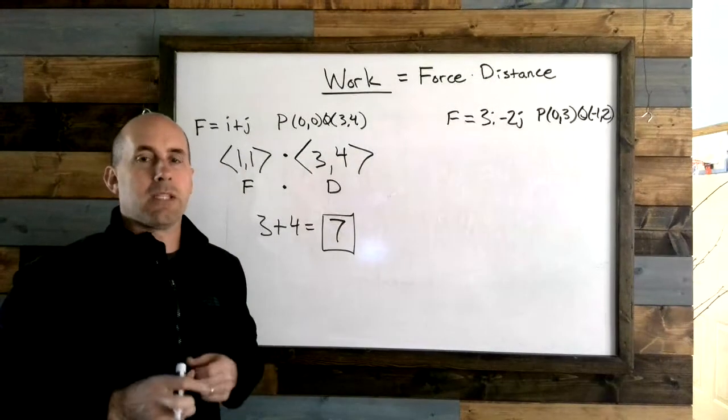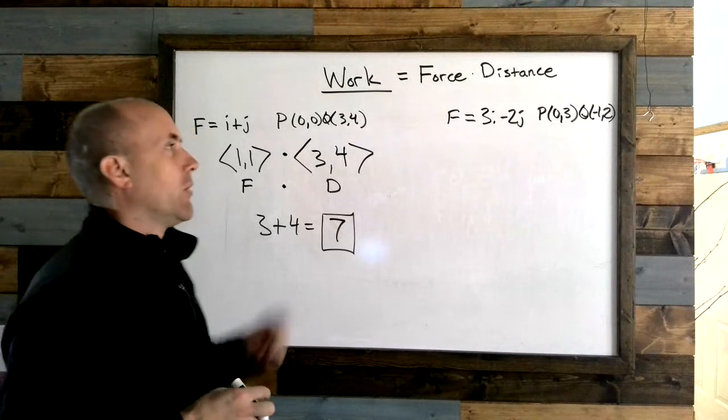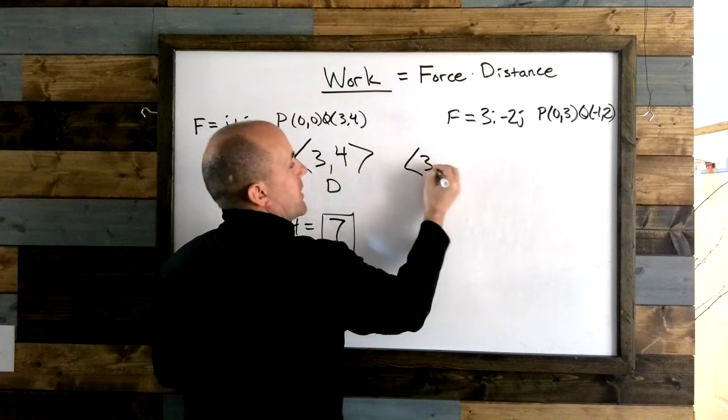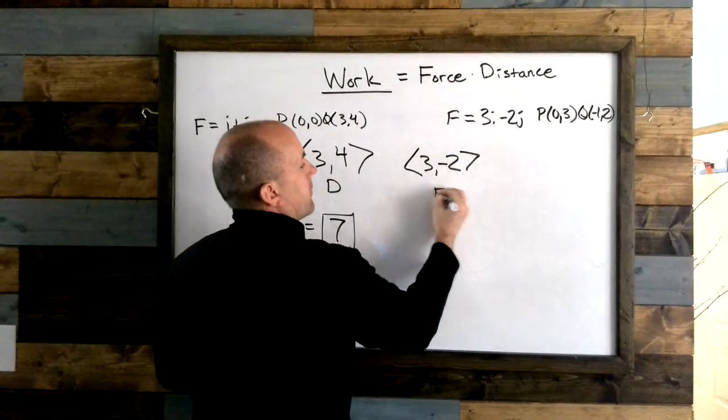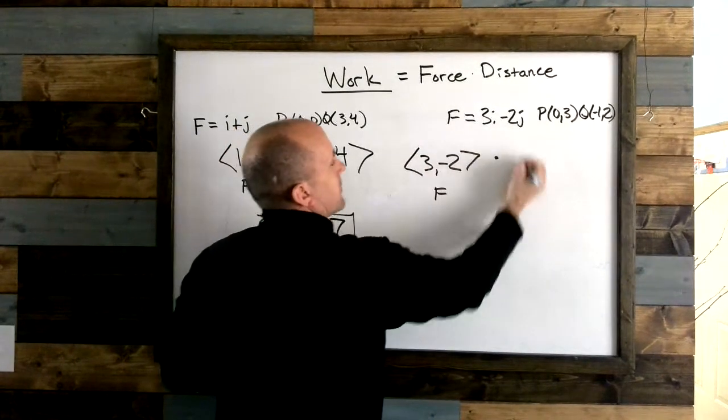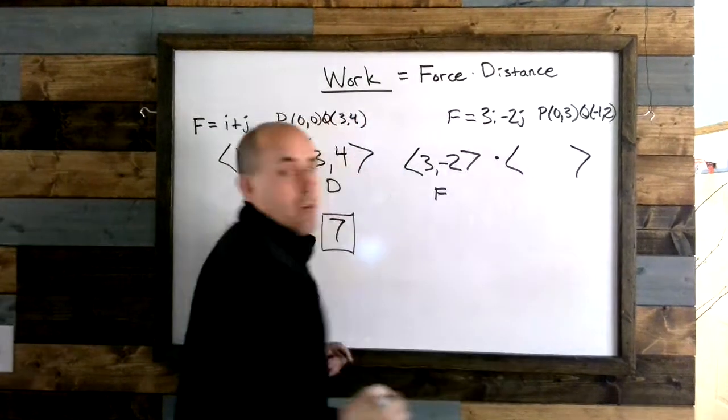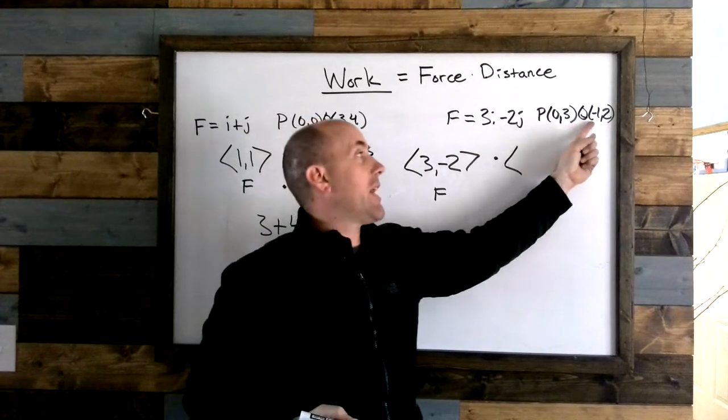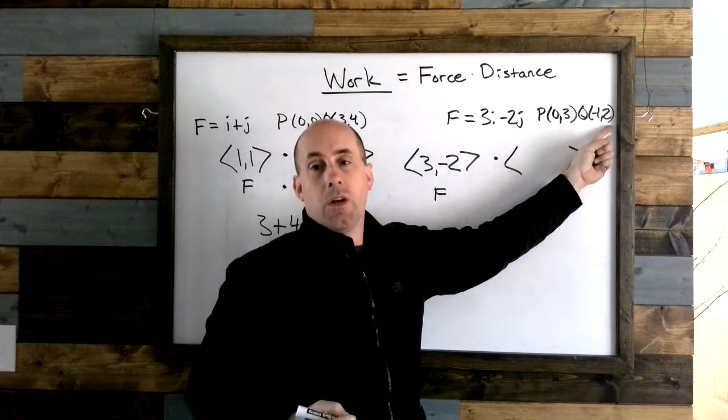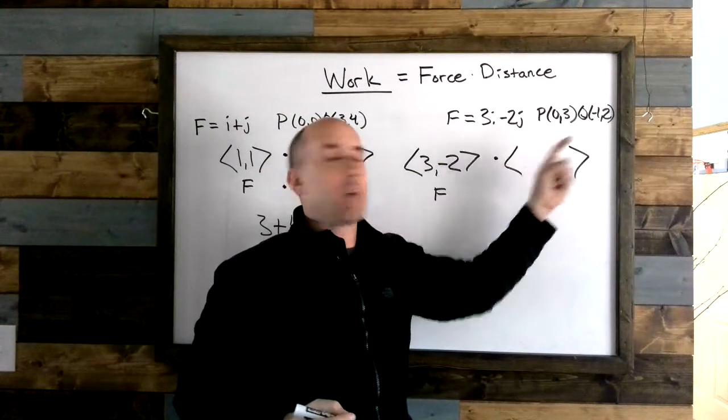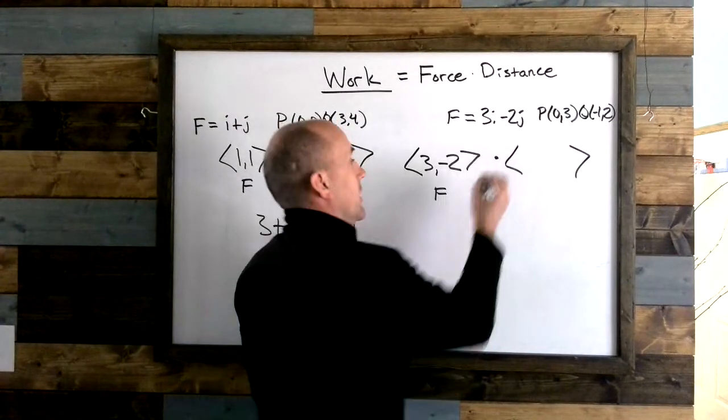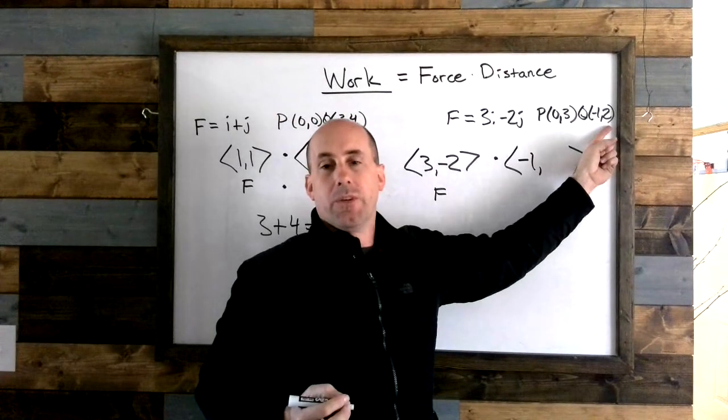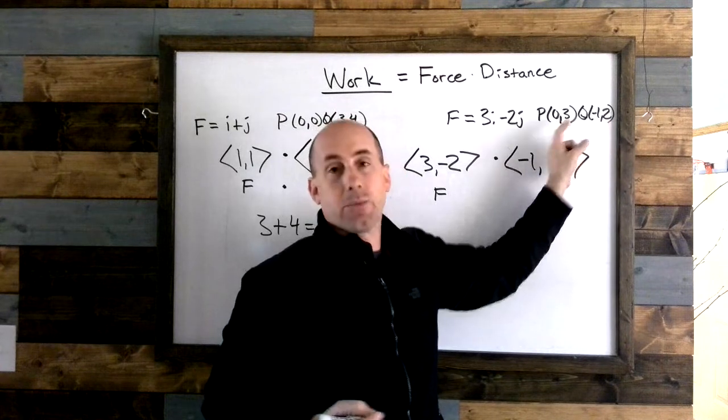That's how we technically define work being done, very applicable in a physics class. I'll look at another example here. The force vector is (3,-2), that's my force vector, times my distance vector. It looks like it starts at (0,3) and it moves to (-1,2). So if it went from zero to negative one, it moved back one unit, so negative one minus zero is negative one. Then it moved from three to two, so it moved down one unit as well. Two minus three is negative one.